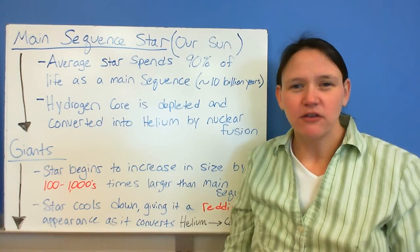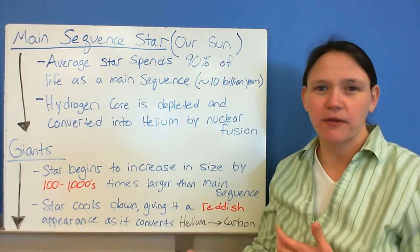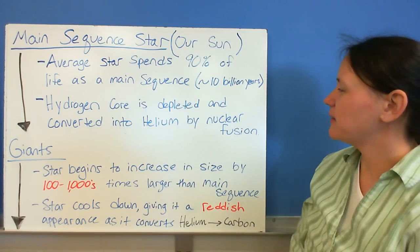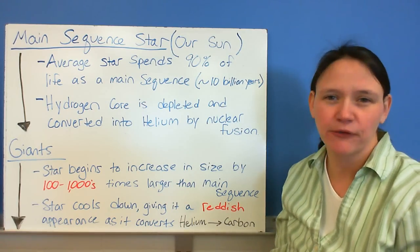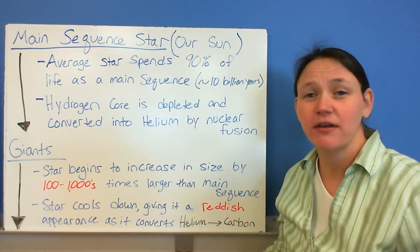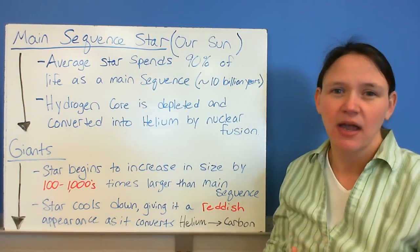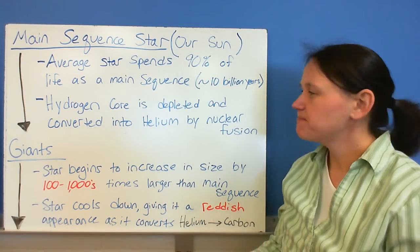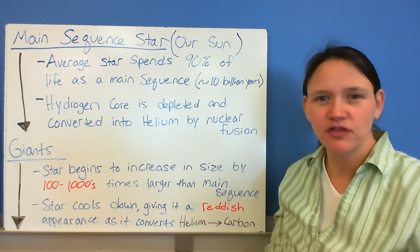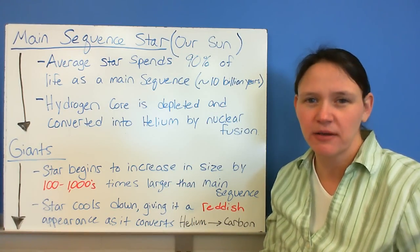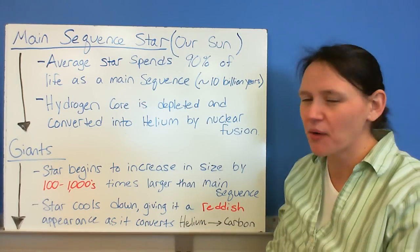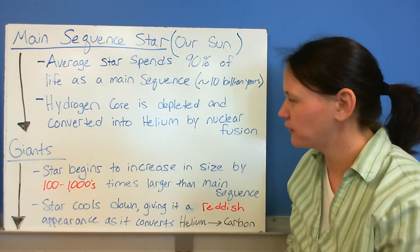The main sequence stage is where the star spends most of its life. And as you can see, it says right here, it's about 90% of its life is during a main sequence phase. Our sun is a main sequence star, and 10 billion years is the average time frame that a star is a main sequence star. Our sun is somewhere in the middle of that, so we're about halfway through the life of the sun.